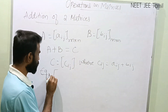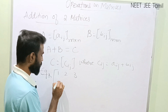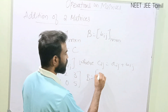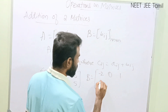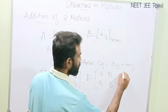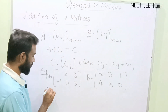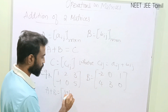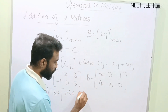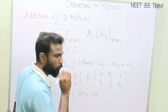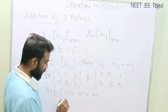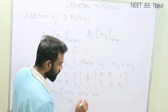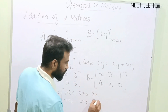For example, matrix A equals [1, 2, 3; -1, 0, 5] and matrix B equals [-2, 0, 1; 4, 3, 0]. Now let us do A plus B. So: 1 plus (-2), 2 plus 0, 3 plus 1 for the first row; and -1 plus 4, 0 plus 3, 5 plus 0 for the second row.